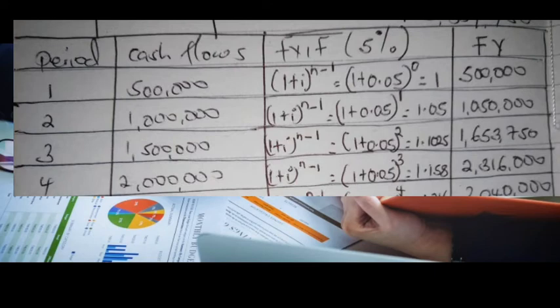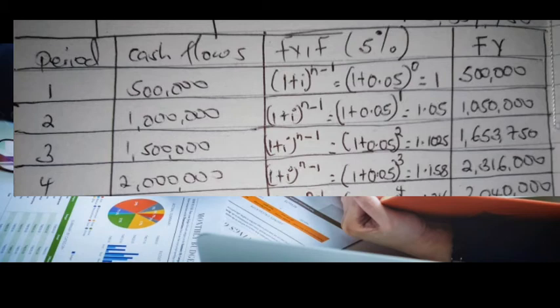For year four, our cash flow is 2 million. The future value interest factor is (1 + 0.05)^3, which equals 1.158. Multiplying 2 million times 1.158 gives us 2,316,000 — the future value in year four.